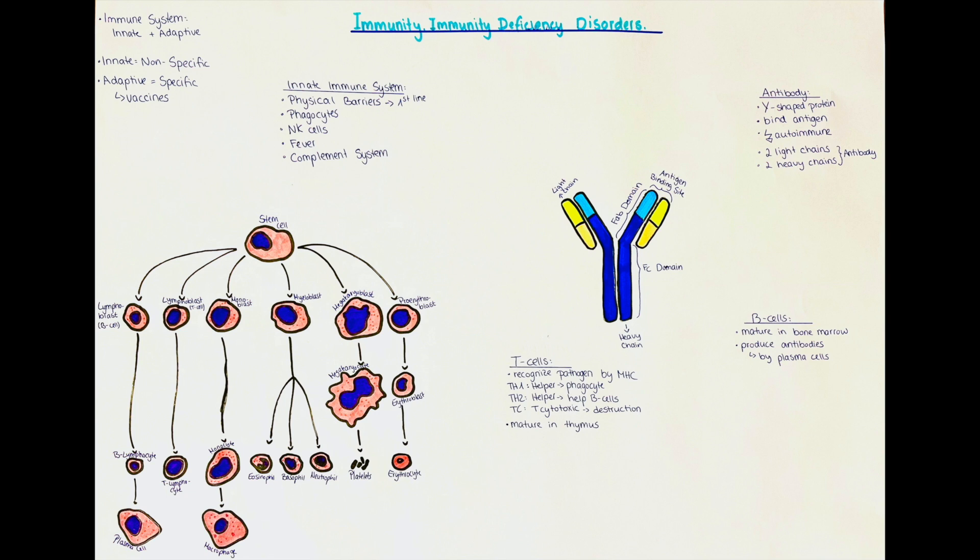The next part of the innate immune system that we will talk about is the complement system. This always confused me in biology and immunology, but just think of it as a subsystem that complements the immunity.